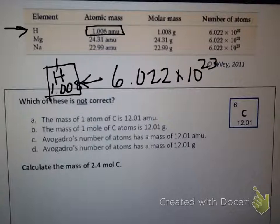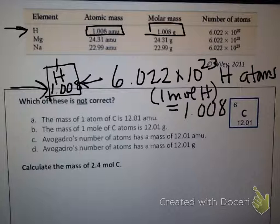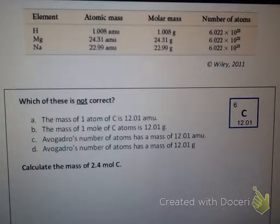If you have a mole of hydrogen atoms, how much does that mole weigh? It turns out the number at the bottom of that box — the average atomic mass — is not only an amu unit; it's also a gram scale value. So if you have one mole of hydrogen atoms it weighs 1.008 grams. We use the same number, but if we have one atom the unit is amu; if we have a mole of atoms the unit is grams. The number remains the same.